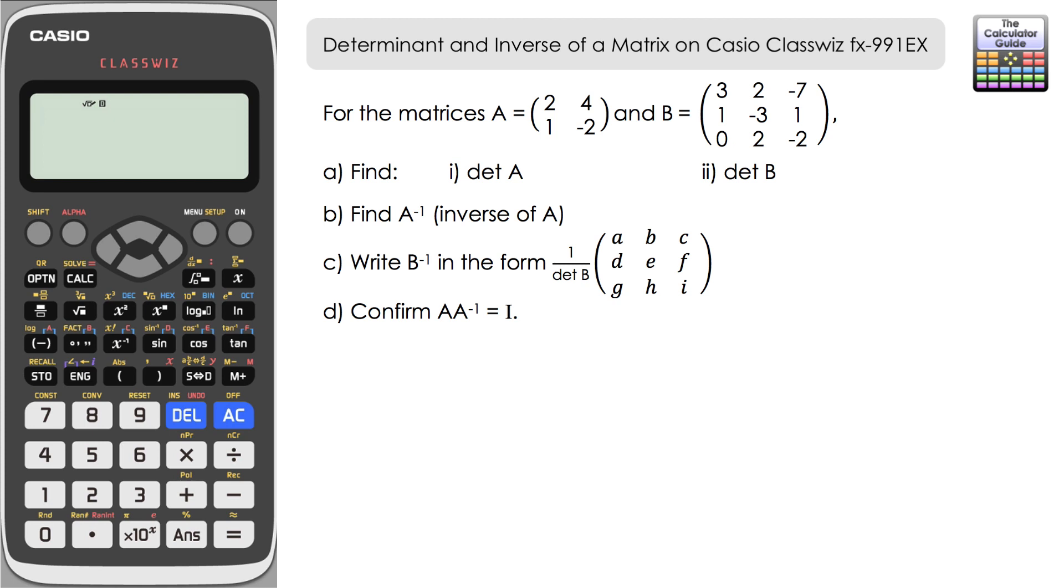We'll find the inverse of B but we need to write it in a particular form, different from how the calculator displays it, but I'm going to show you how you can find the information to write it in this form. And lastly we need to confirm that A multiplied by its inverse equals the identity matrix. With A being a 2x2 matrix, that means I will be the 2x2 identity matrix.